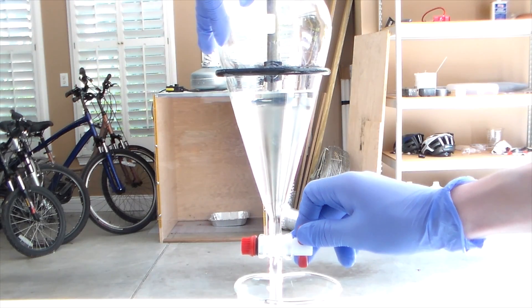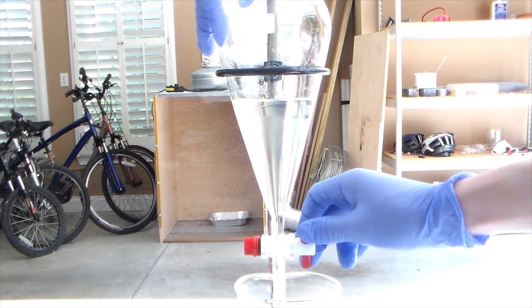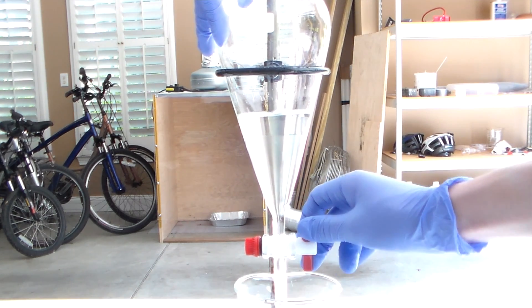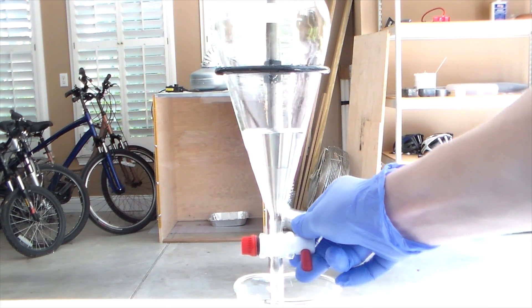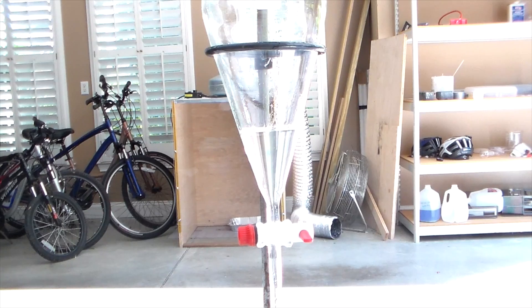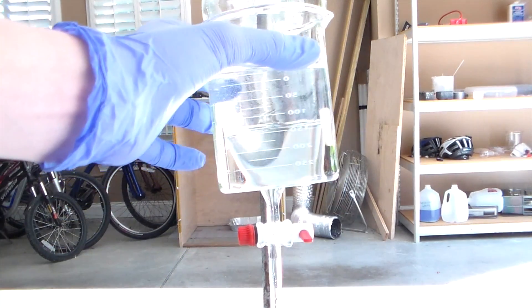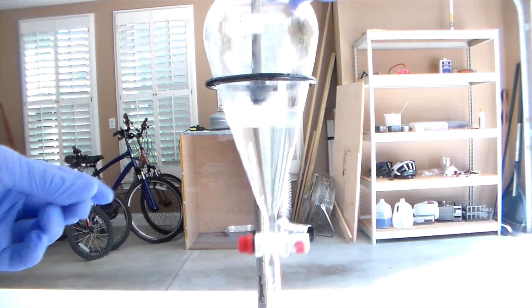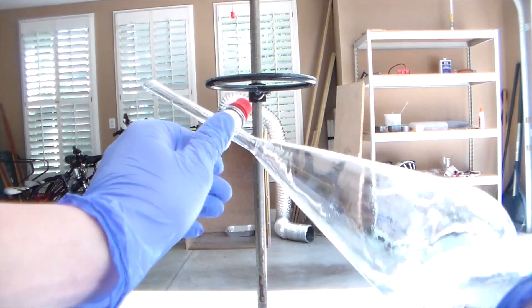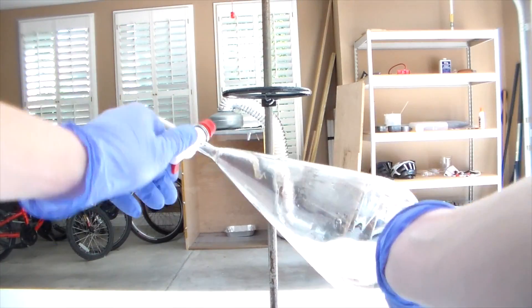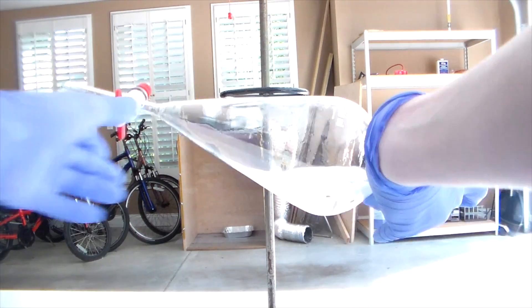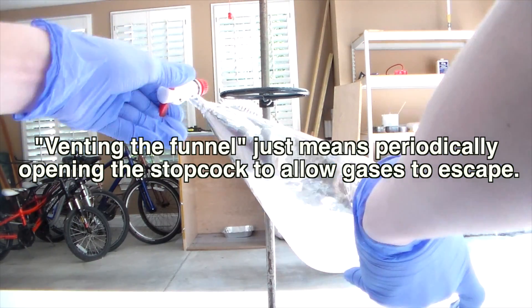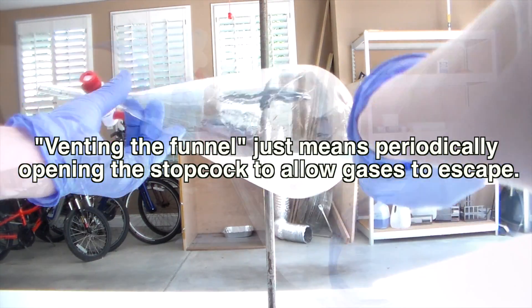After the layers separate, remove the bottom aqueous layer and retain the top layer, which contains the tert-butyl chloride product. Wash this layer with a 5% sodium bicarbonate solution and shake the funnel to mix the layers. Because we are neutralizing an acid with sodium bicarbonate, a bunch of carbon dioxide gas will be produced. Make sure to vent the funnel frequently to release the gas and prevent the buildup of pressure.